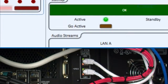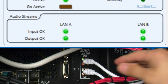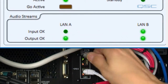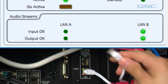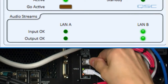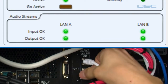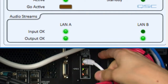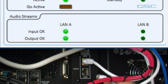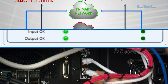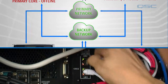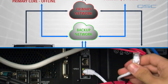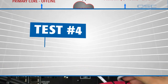We can also unplug the Ethernet cable, and because this network is redundant, you'll notice that we won't have any audio dropout as long as one cable is plugged in. We can take one out, trade one in for the other, and the audio will continue uninterrupted.